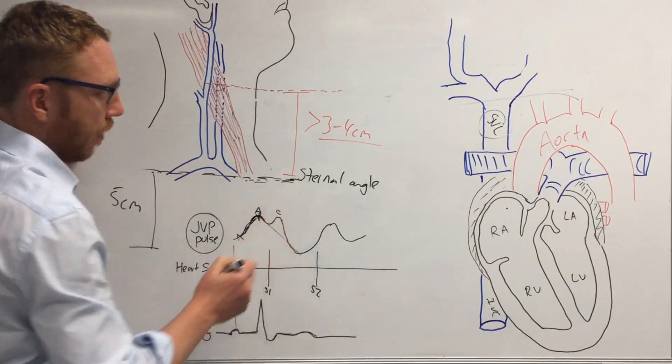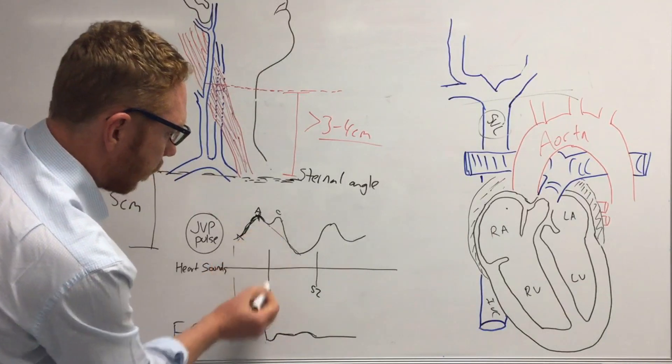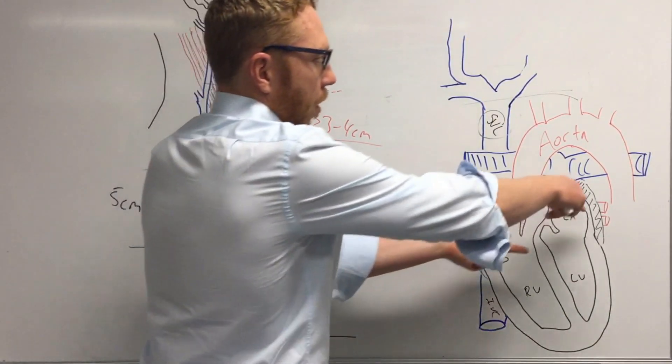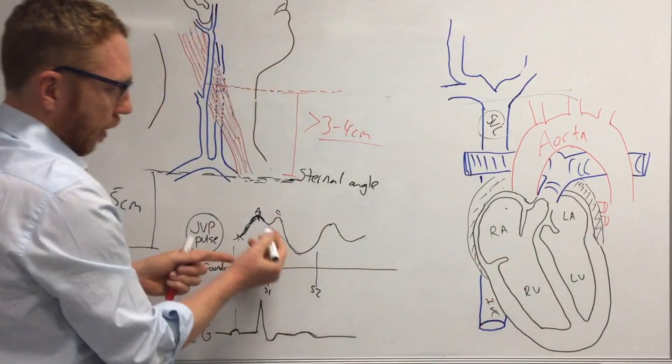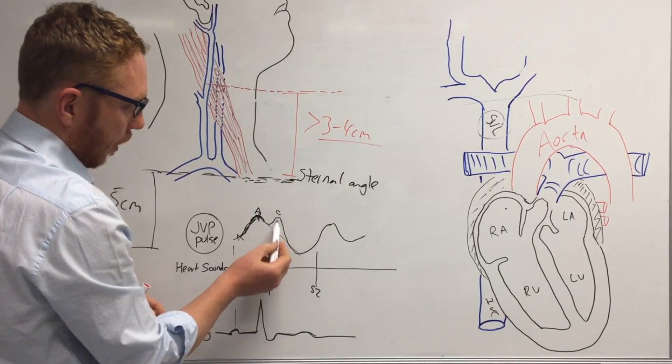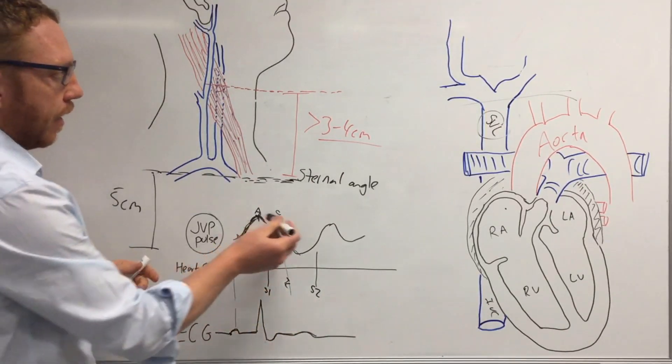And this is the C wave, which is going to correspond with the S1, almost corresponding with the S1 wave. So that's the closure of the tricuspid, or actually both valves close, but in terms of this we're just focusing on the tricuspid. So this here would be the tricuspid closing. That's the C wave.